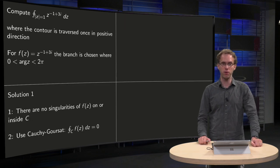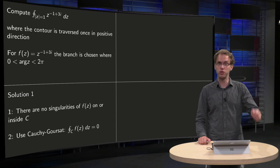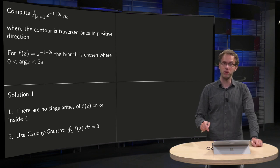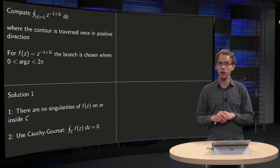But what's the problem? There are no singularities of f(z) on or inside C, so we can just use Cauchy-Goursat and conclude that our integral equals 0. Is this correct or is there a step somewhere wrong?